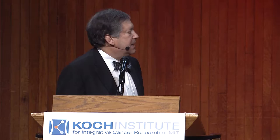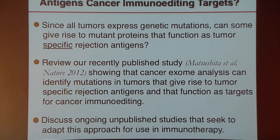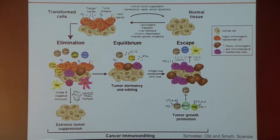We now think of cancer immunoediting as an extrinsic tumor suppressor mechanism that engages only after cellular transformation has occurred, and intrinsic tumor suppressor mechanisms like P53 or RB have failed. In its most complex form, cancer immunoediting exists in three phases. The first is the phase that we've called elimination — a modern view of the older concept of cancer immunosurveillance — now taking into account that innate and adaptive immunity need to work together to recognize and destroy tumors long before they become clinically apparent.